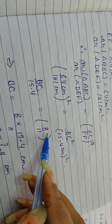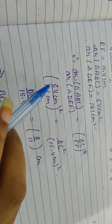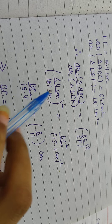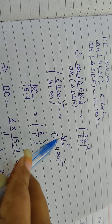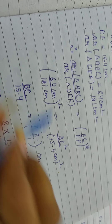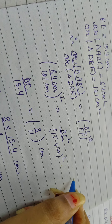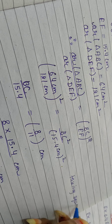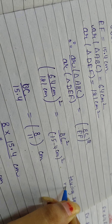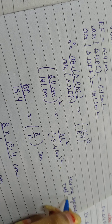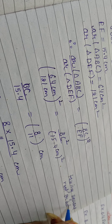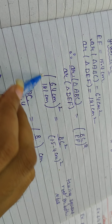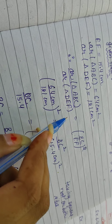BC की square आपके पास क्या हो जाएगी? 64/121। अगर आप दोनों का square root लेंगे — taking square root on both sides — तो यहाँ पे square root लिया। यह और यह cut हो गया। तो BC/EF = 8/11।